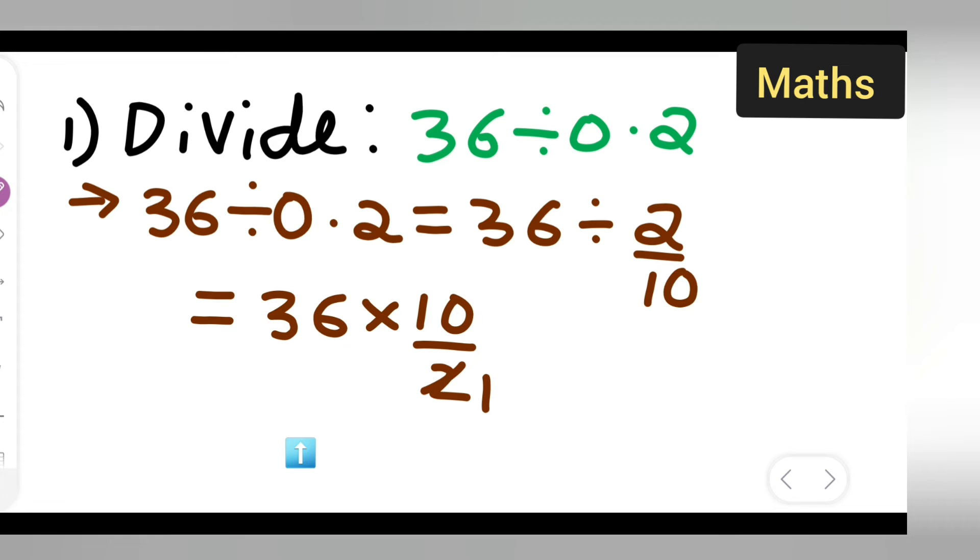So two ones are two. Or else you all can, don't cancel this, okay? Write down this 10 as it is. So here two ones are two, then here it will be two ones are two.